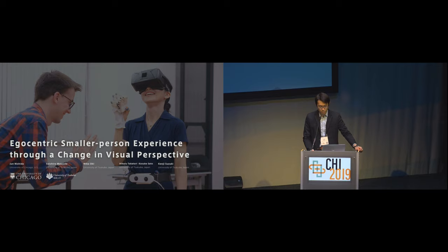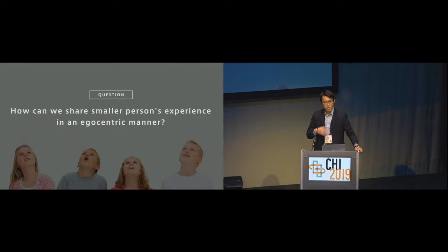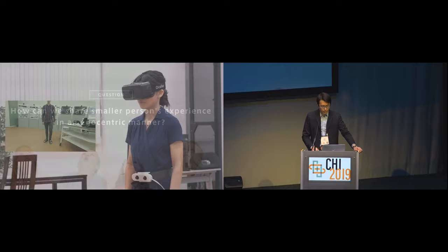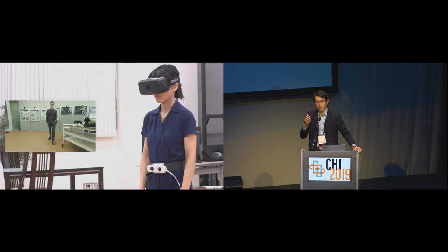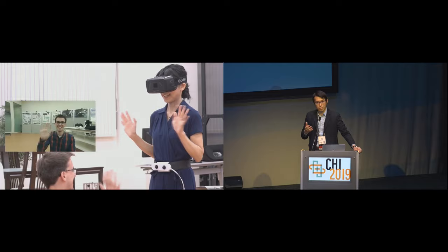The question in this research is how can we share one's experience in daily life, particularly a smaller person's experience, in a more embodied, social, and egocentric manner? To tackle this question, we developed a wearable device that can change your visual perspective into a lower position, so wearers can observe the surrounding world from a lower stature and understand how children — a smaller person — perceive the world.